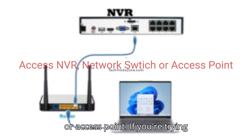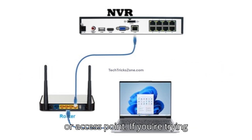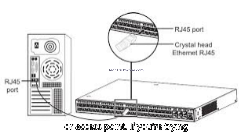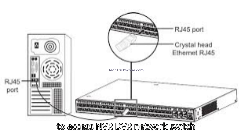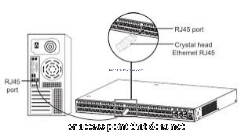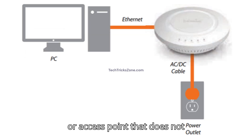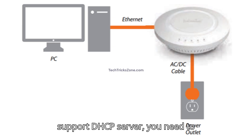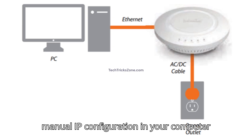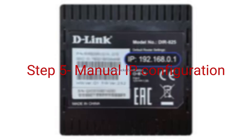Step 4: Access an NVR, network switch, or access point. If you're trying to access an NVR, DVR, network switch, or access point that does not support a DHCP server, you need to manually configure the IP settings on your computer or laptop network.